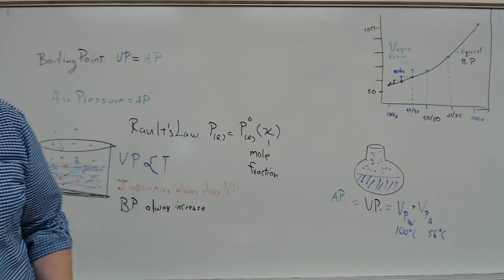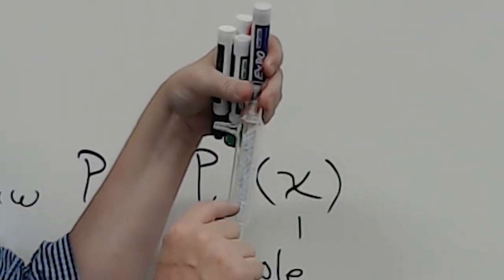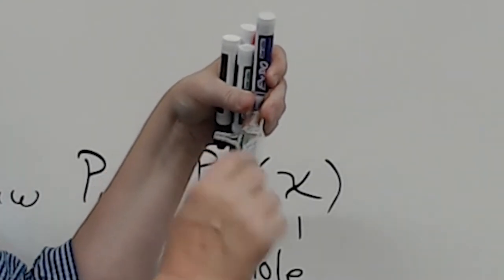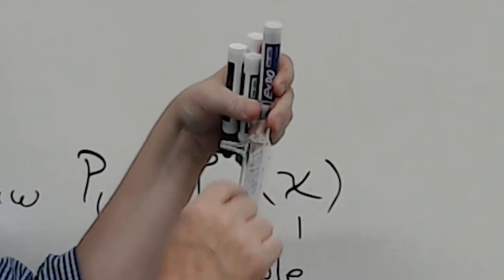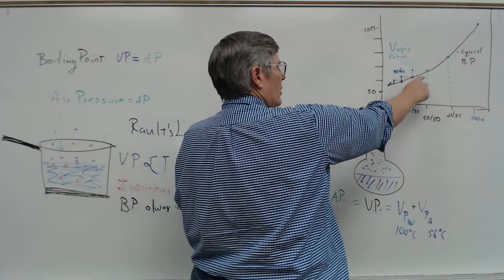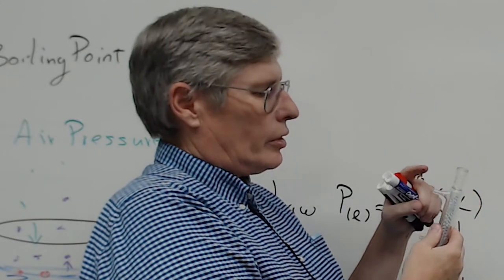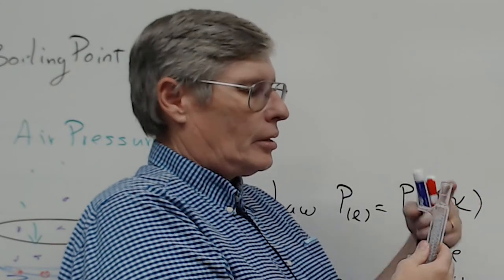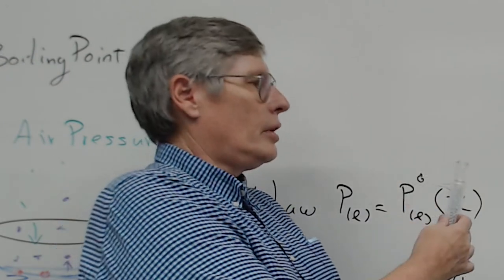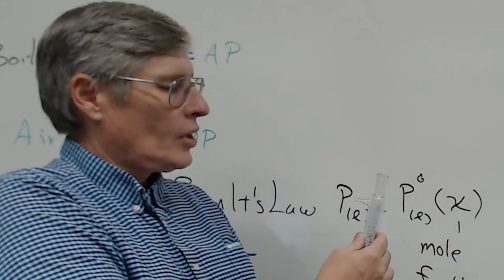Every time vapor recondenses then re-boils, recondenses and re-boils, we call that a fractionating plate. If we do it enough times we should eventually end up with only the vapor of the lowest boiling point substance coming off and going down the condenser. That's the goal of a fractionating distillation — to separate out the one component.